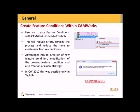In CamWorks 2011 and onwards, you now have the ability to create feature conditions within the CamWorks SolidWorks environment. This means you no longer have to go into the technology database to create feature conditions. This will reduce errors, simplify the process, and also reduce the time to create new feature conditions. In CamWorks 2010, this was possible only in the technology database. Let's look at a demonstration of how this is done.